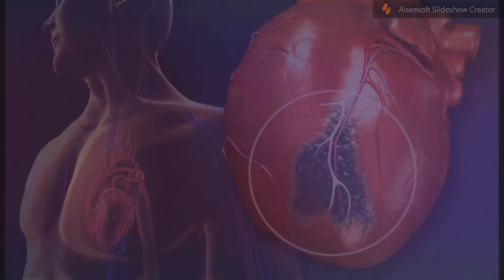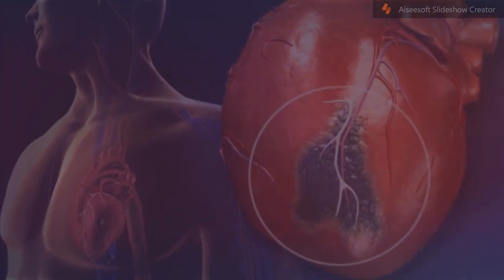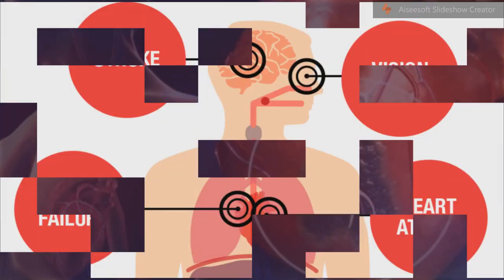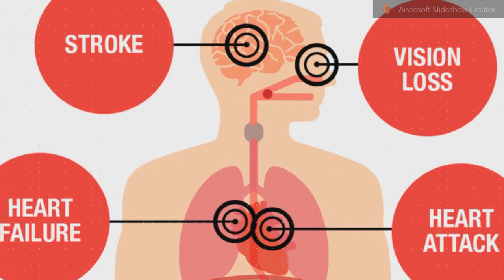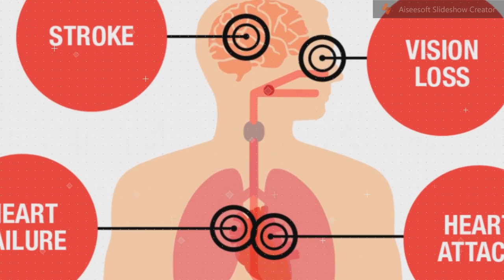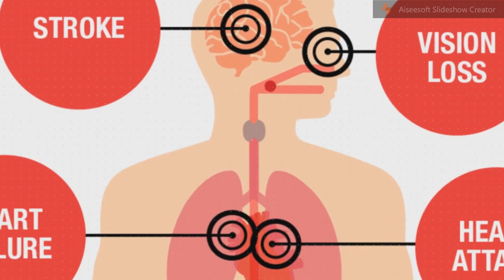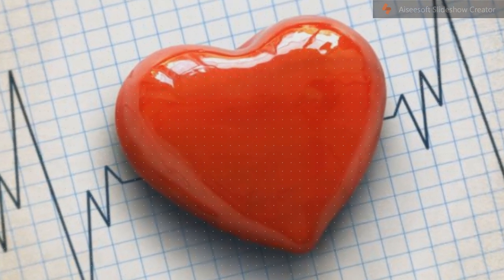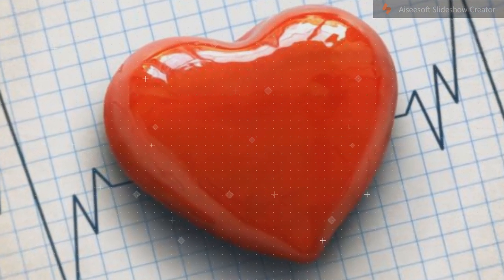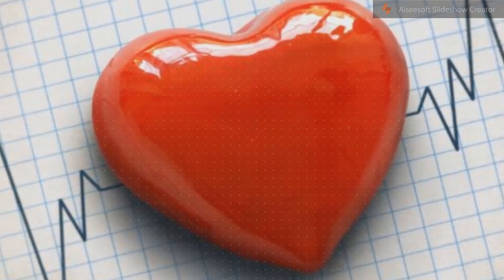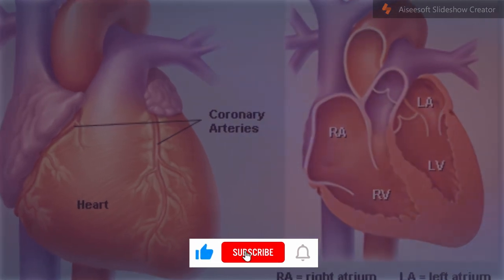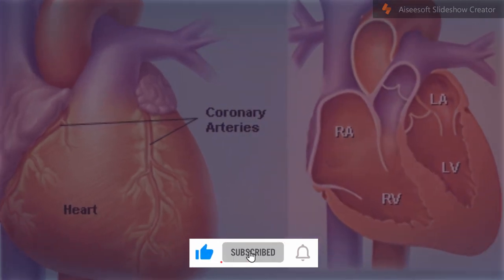Globally, disability-adjusted life years (DALYs) loss to ischemic heart disease are predicted to account for 5.5% of total DALYs in 2030, making it the second-most important cause of disability, after unipolar depressive disorder, as well as the leading cause of death by this date.